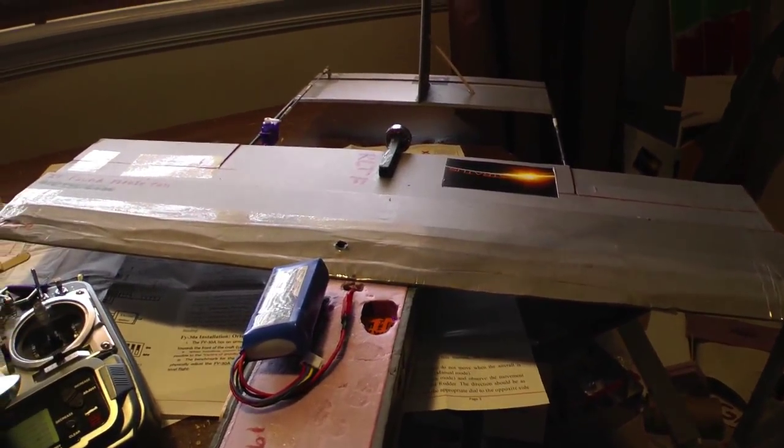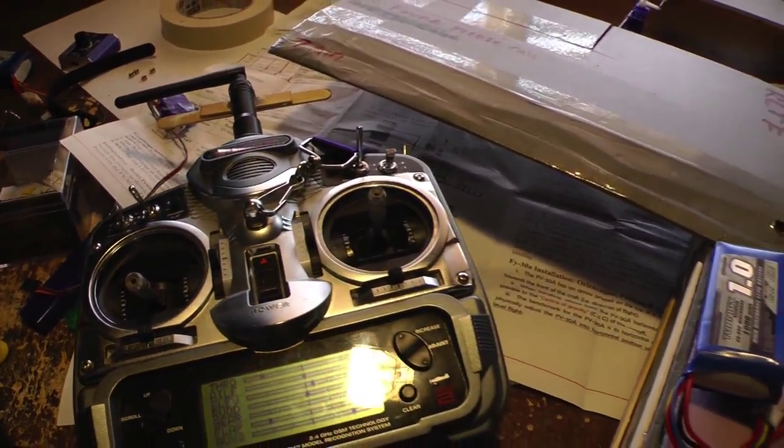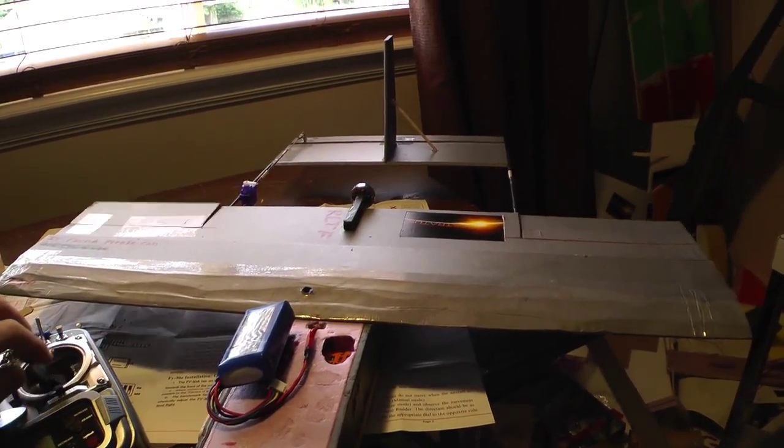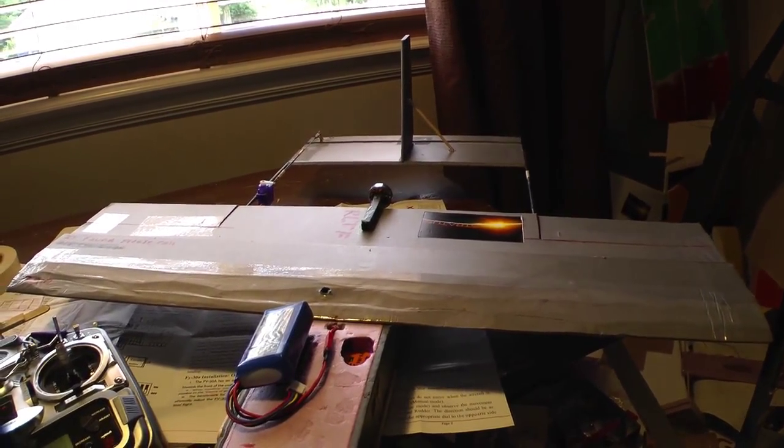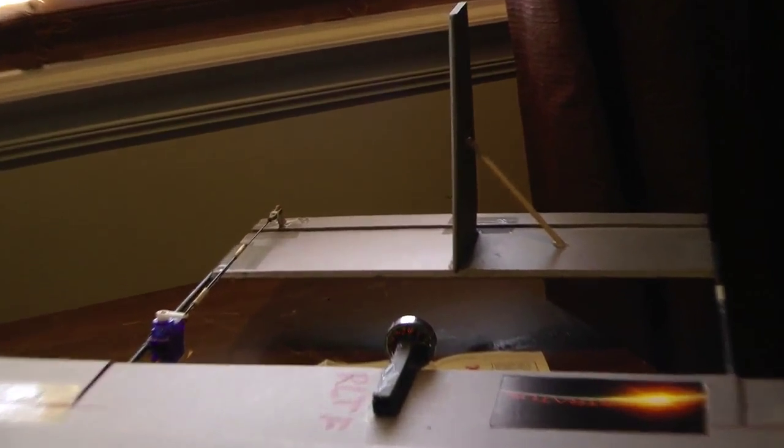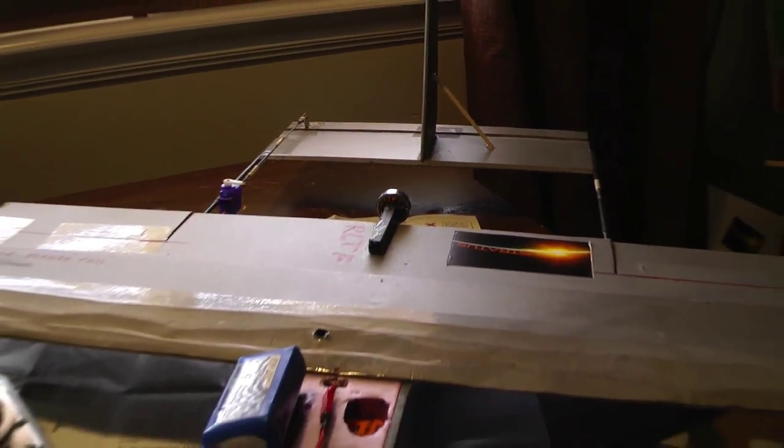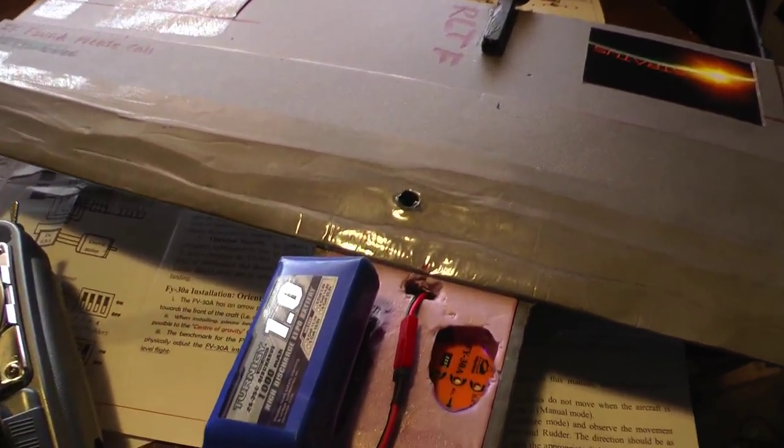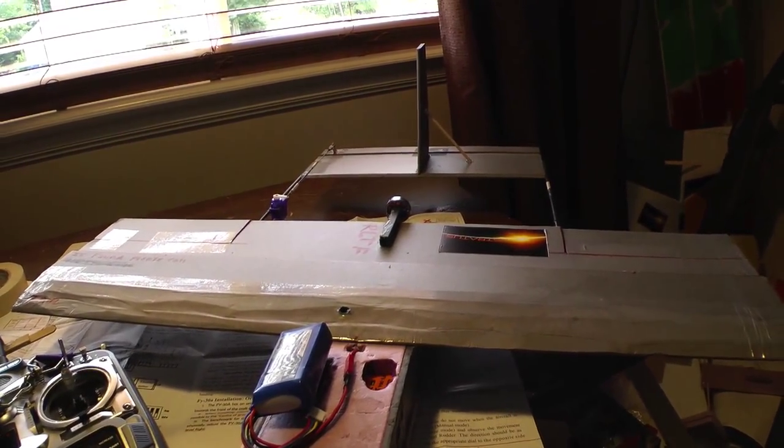So here we have the FY30A mounted on my micro drone version 3. We've got a Spectrum DX7. The control surfaces are working. This is just a three-channel plane, so there's no rudder. We're not going to be using rudder today, even though the FY30A is fully capable of doing rudder stabilization, or yaw stabilization.